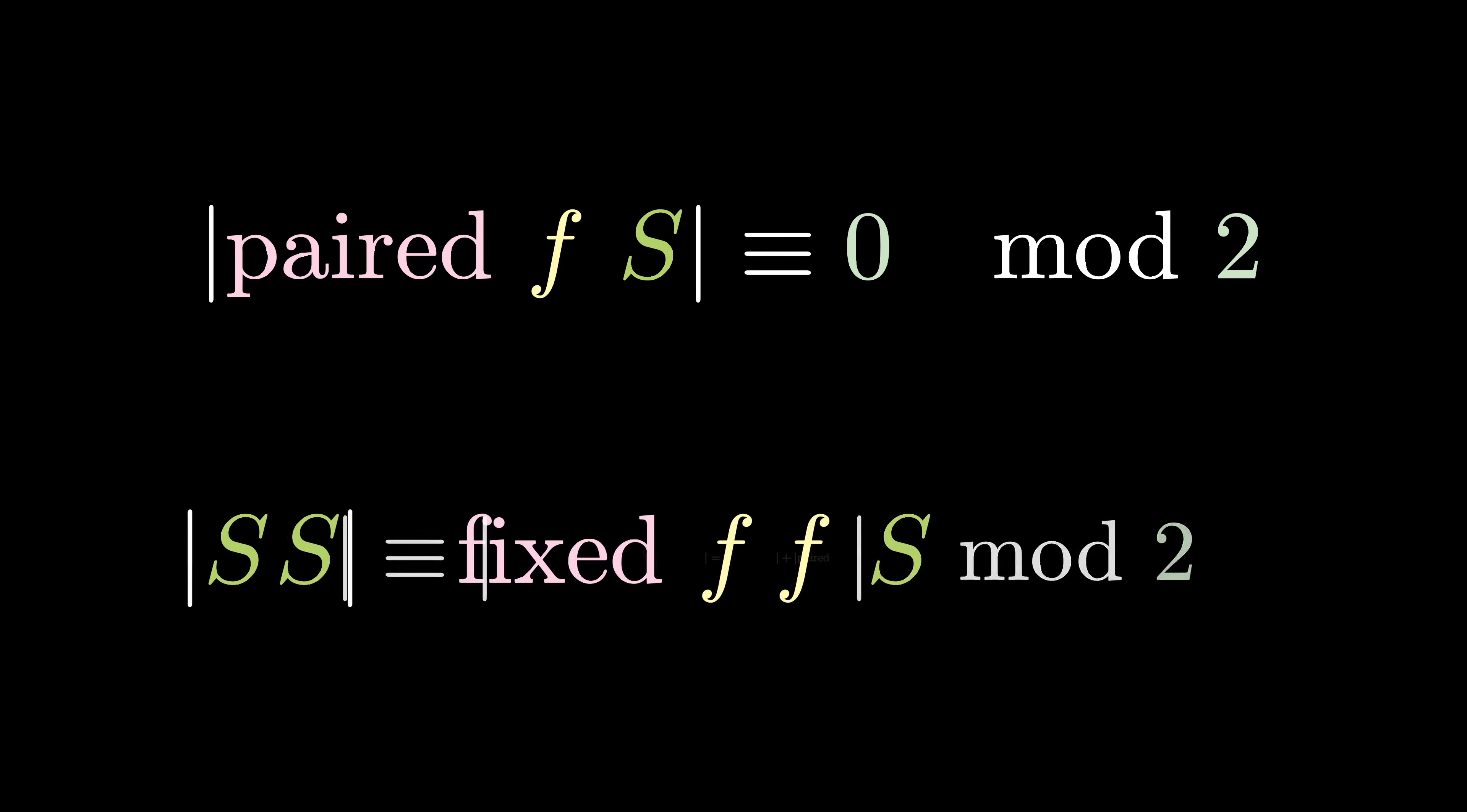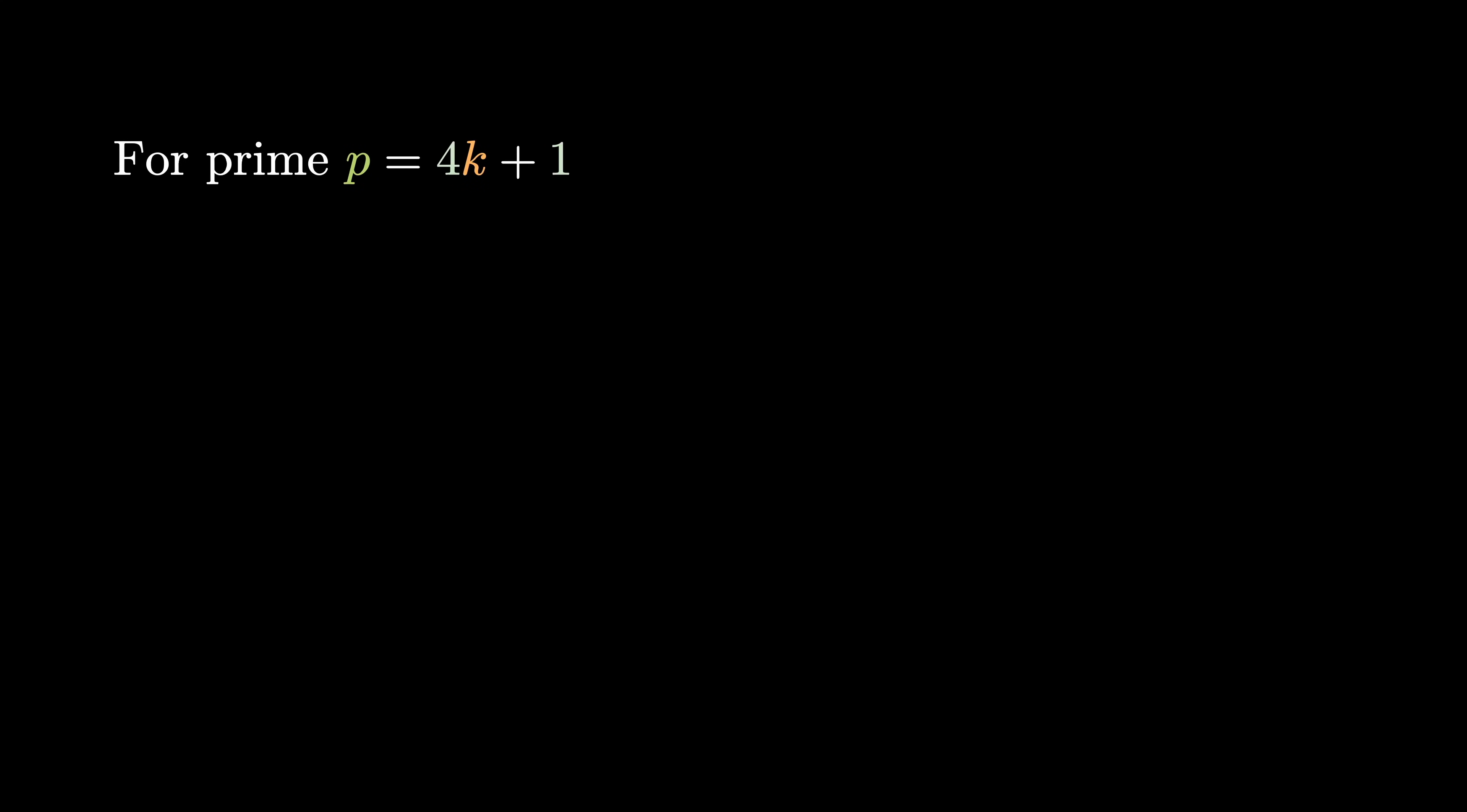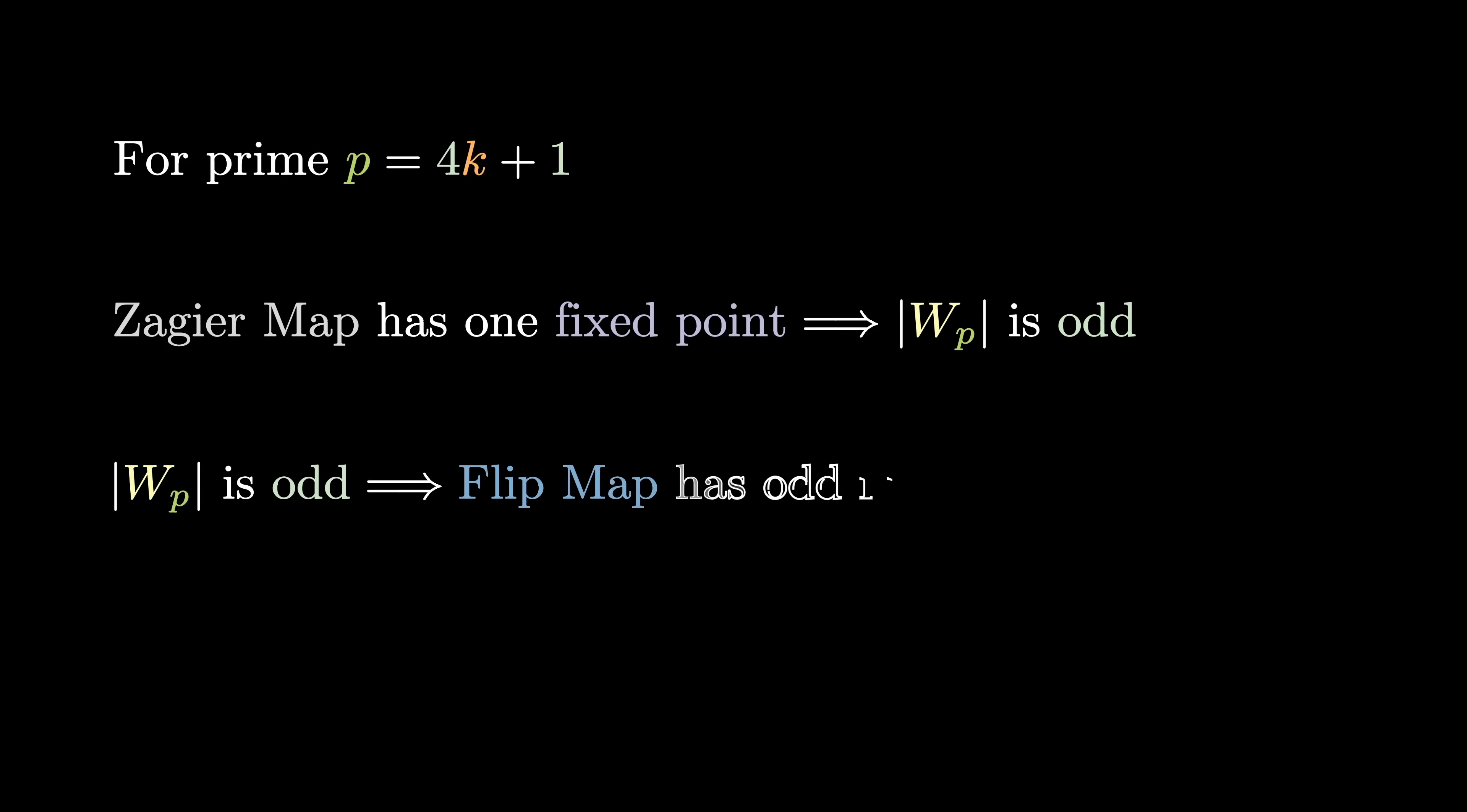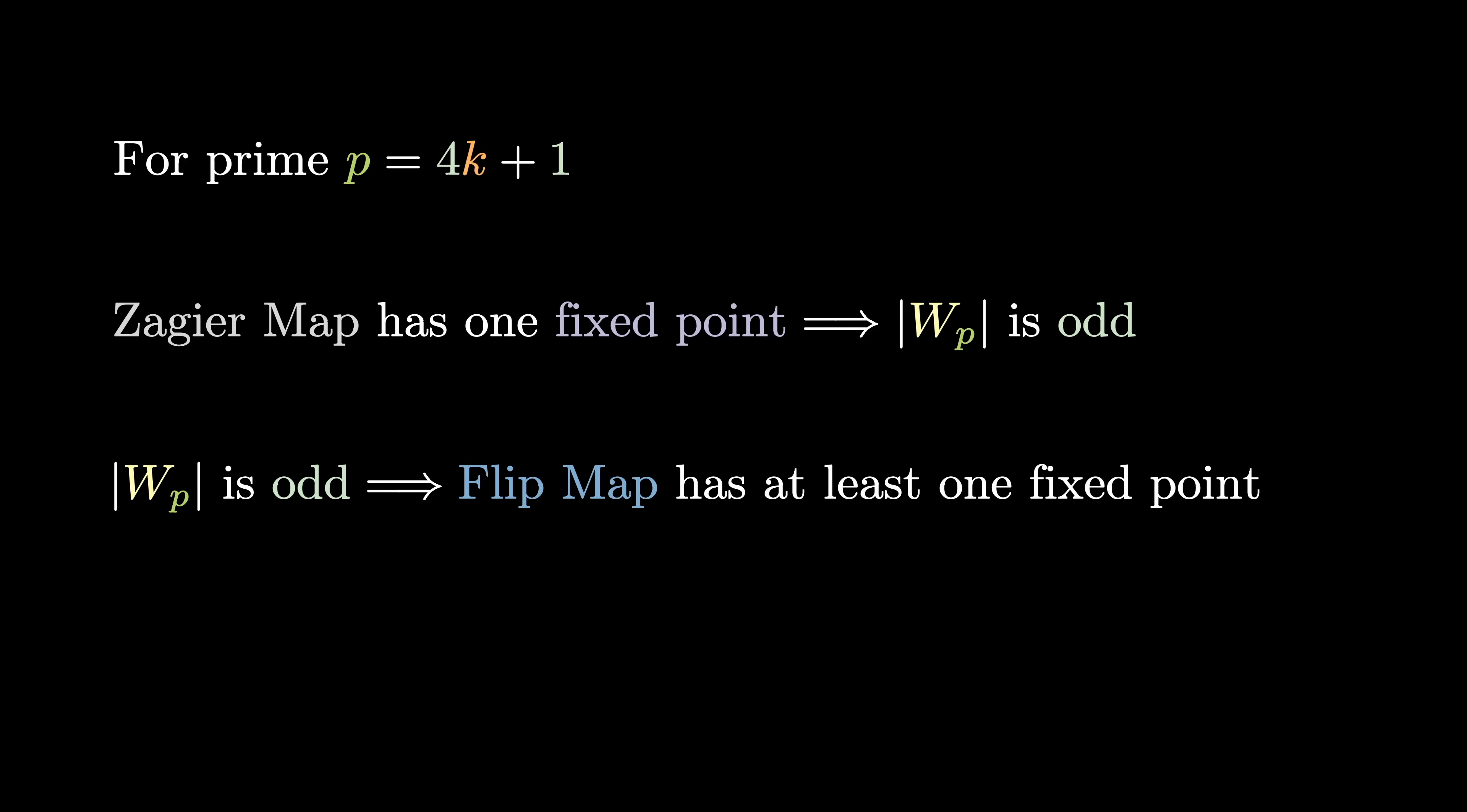Let's go back to when we talked about involutions. I said that if the number of fixed points is odd, the size of the set is odd. Well, we know the Zagier map has only one fixed point, so the size of the set of windmills for a prime of the form 4k+1 has to be odd. Now we turn heads to the flip map. Since the size of the set is odd, the number of fixed points of the flip map must be odd. The lowest possible number is 1, so there has to be a fixed point. In other words, there has to be a point where y = z, resulting in p = x² + 4y² = x² + (2y)², completing our proof.